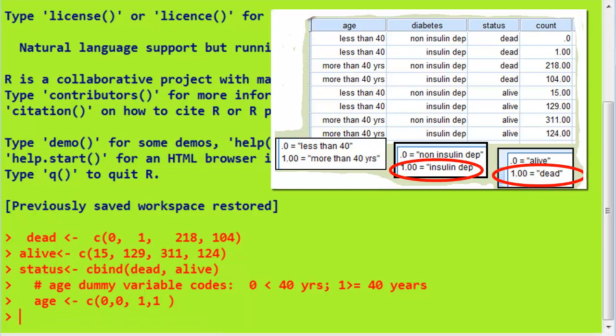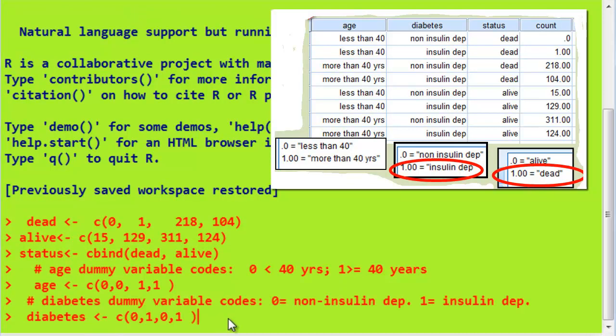Now we do the same for our other independent variable, the diabetes one. We have two diabetes types: non-insulin-dependent, which I've coded as 0, and insulin-dependent, which I've coded as 1. So again, exactly the same: 0, 1, 0, 1.